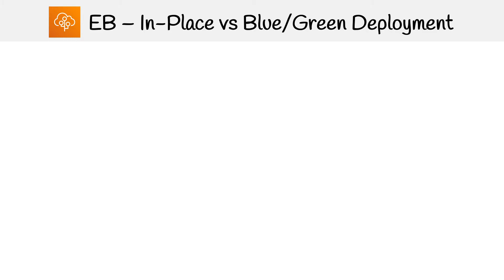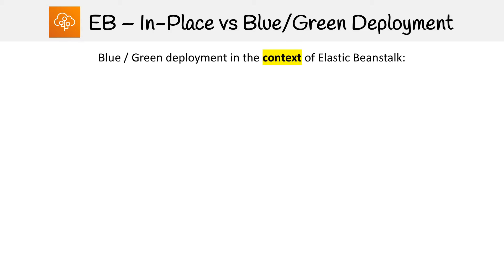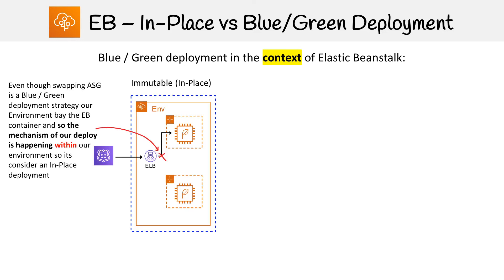This is the slide where everything is going to fall into place, and you're going to really understand the difference between in-place versus blue-green deployment. This is in the context of Elastic Beanstalk. We're first going to look at an immutable deployment methodology. With immutable, what happens is it replicates the auto scaling group with another EC2 instance, then facilitates the transition to the new production servers by switching over to this auto scaling group and then destroying the old one.